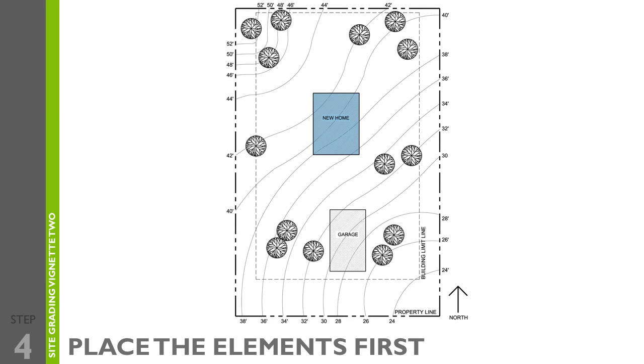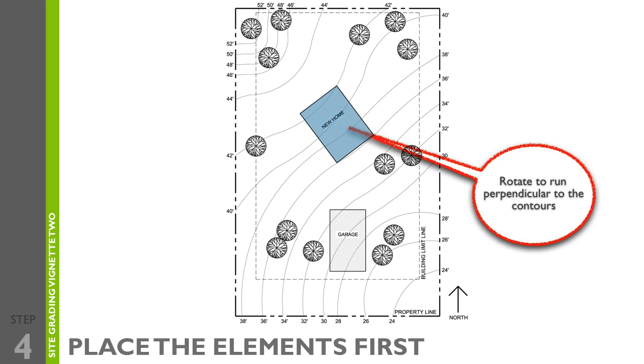Step number four is to place the element on the site. Place it at a location on the contour line where the surrounding contour lines would be the easiest to adjust. Avoid any closely spaced contours, as this indicates a steep slope. Here, we've placed the new home centered over the 38 foot contour, as that will be the level area. After placing the home on the site, rotate it so that it is perpendicular to the contours for proper site drainage.